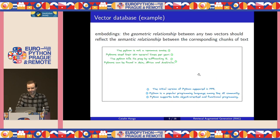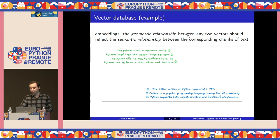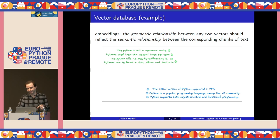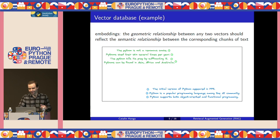In order for these vector embeddings to be useful, they have to satisfy a few basic properties. The most important one is that the geometric relationship between any two vectors should reflect the semantic relationship between the corresponding chunks of text. This means that chunks which are semantically similar should be embedded into vectors that are located next to each other, and on the other hand, if two vectors are far away, they should correspond to chunks which are not related.